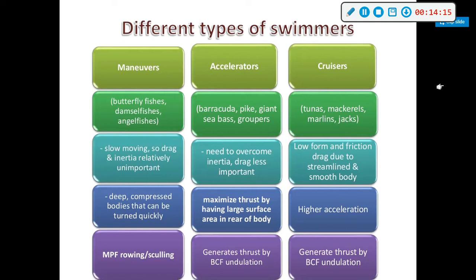Cruisers — your tunas, mackerels, marlins, and jacks — travel in long straight lines very quickly. They minimize form and friction drag through streamlined, smooth bodies. They have higher acceleration and generate thrust by BCF undulation.